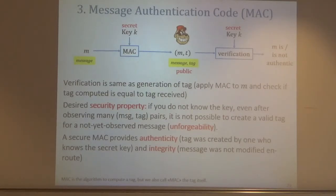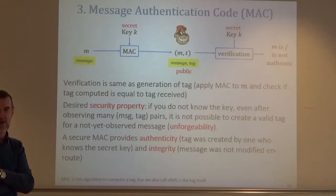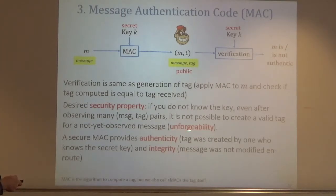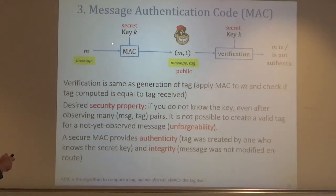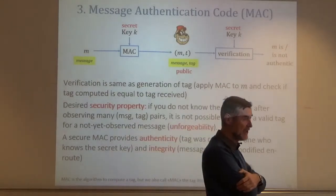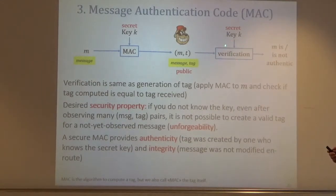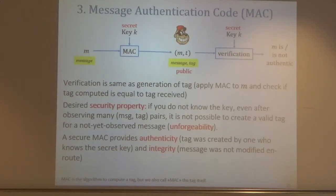Message authentication code works like symmetric encryption — it has one single key used at both sender and receiver. At the sender, you append a tag T to the message, computed by combining the message and the secret key. At the receiver, you verify using the secret key. If the recomputed tag matches the received tag, the message is declared authentic; otherwise it is not.